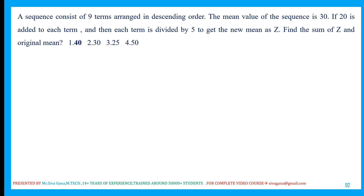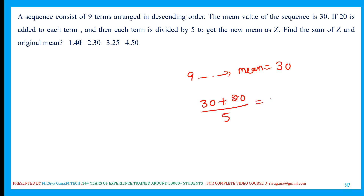A sequence of 9 terms arranged in descending order has a mean of 30. If 20 is added to each term and then each term is divided by 5, find the new mean Z. Very simple: each term was 30, so (30+20)/5 = 50/5 = 10 = Z. He asks for the sum of Z and the original mean: Z + 30 = 10 + 30 = 40. Very simple LKZ-level question.